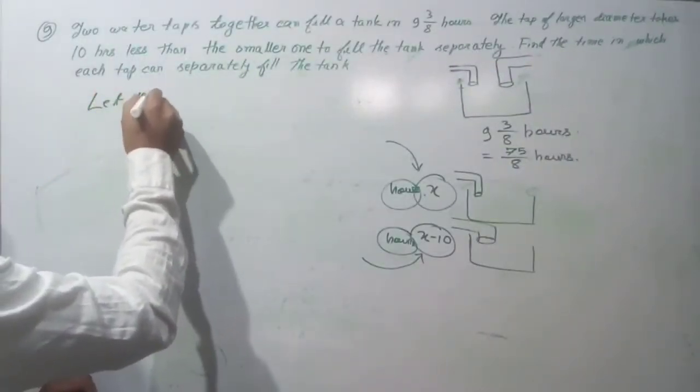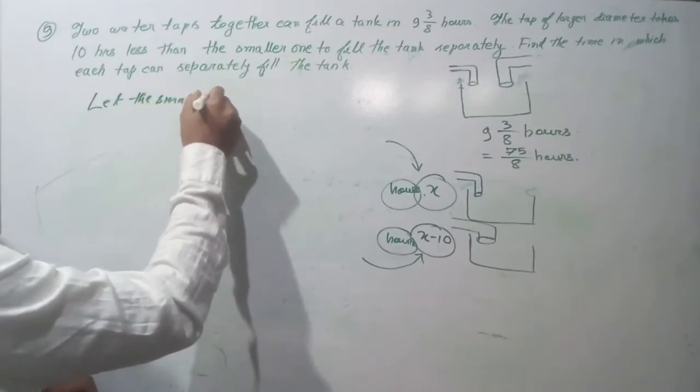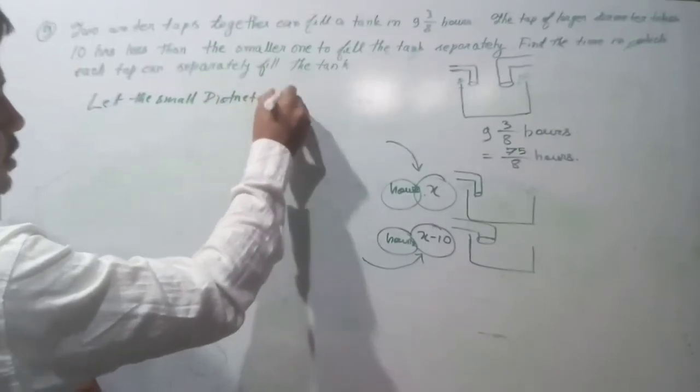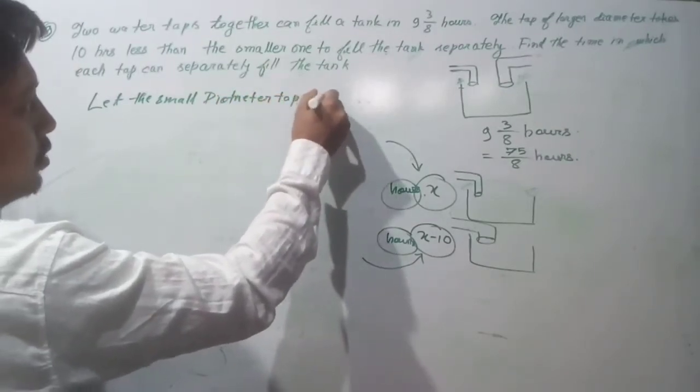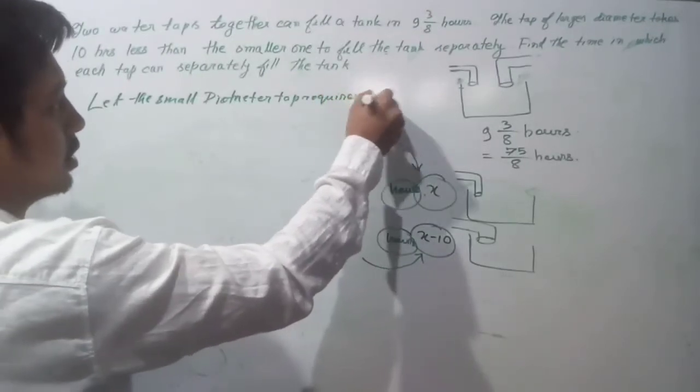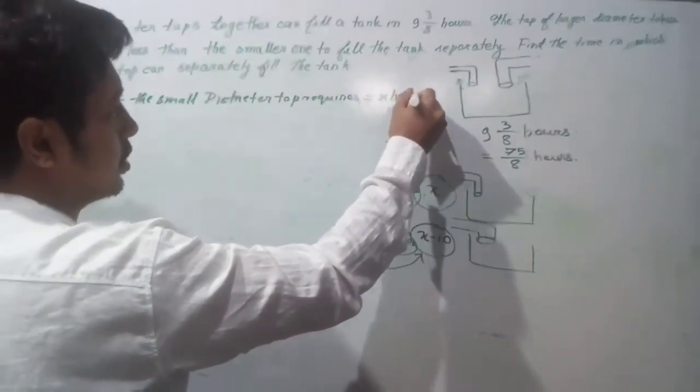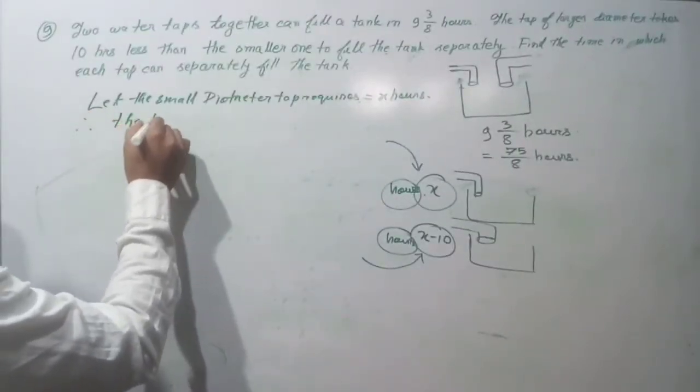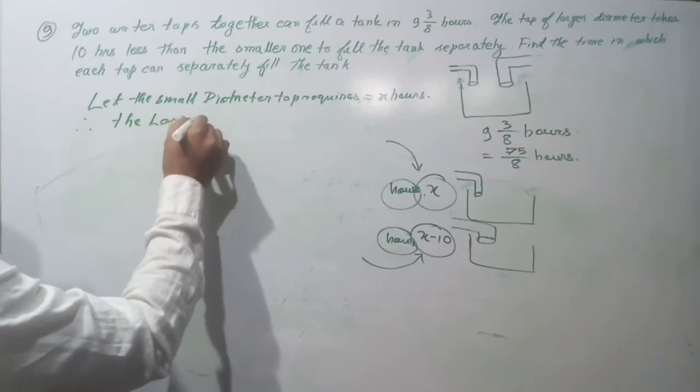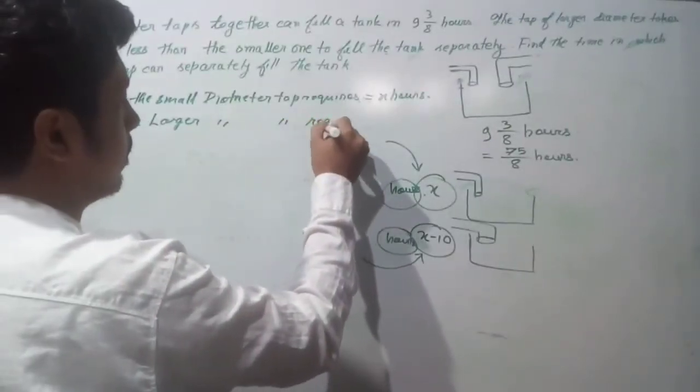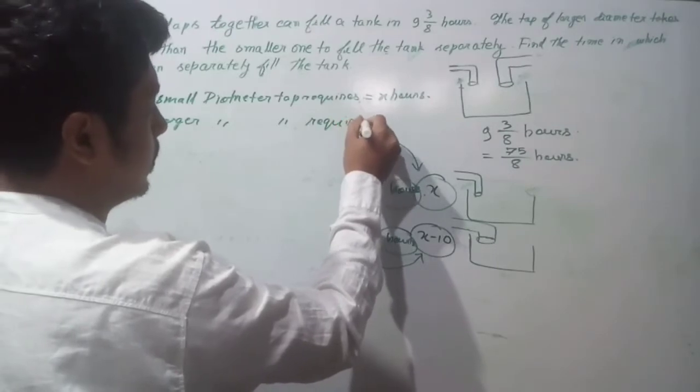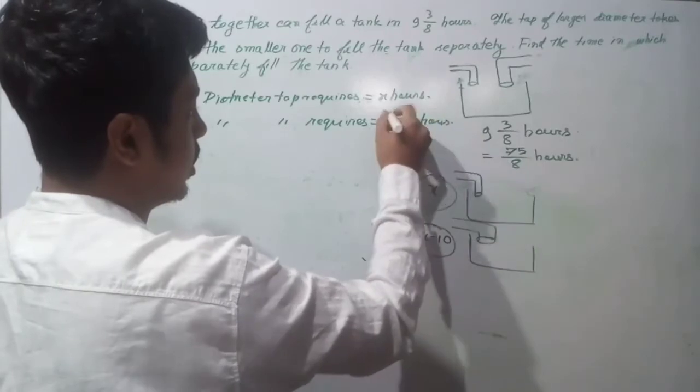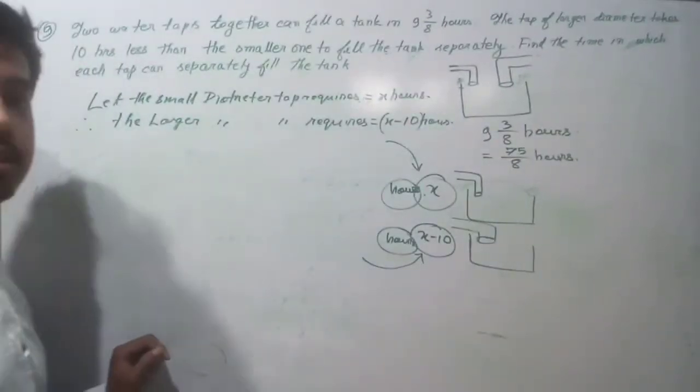Let the small diameter tap requires x hours to fill the tank. Therefore, the larger diameter tap requires x minus 10 hours. Is this clear? X hours and x minus 10 hours.